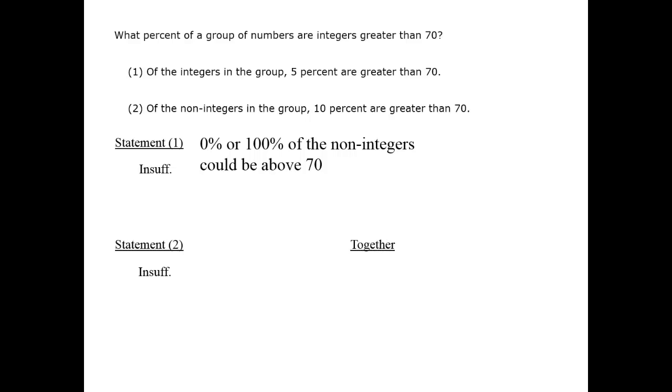When we do that, there is still a problem here. I don't know how many integers or non-integers there are. There could be 10 integers and 100 non-integers, or 10 integers and 1,000 non-integers, for example. Each of these cases, which is valid, would yield different answers to the question.